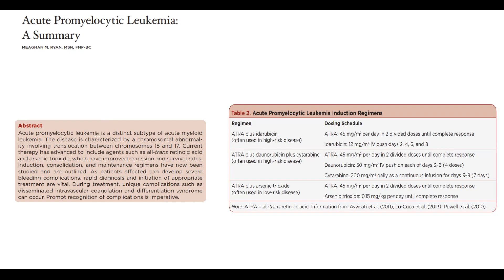Acute Promyelocytic Leukemia is a subtype of Acute Myeloid Leukemia with several unique features. First, this leukemia is caused by a specific translocation between chromosomes 15 and 17. It has a unique treatment — all-trans retinoic acid (ATRA) — which is included in every treatment regimen, and it's the only leukemia where we use ATRA. Most significantly, APL can cause severe bleeding complications through induction of disseminated intravascular coagulation, and it's the only leukemia that can cause DIC by itself. This makes it a very popular exam question.